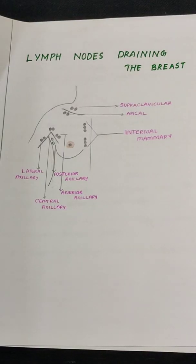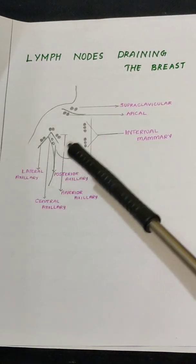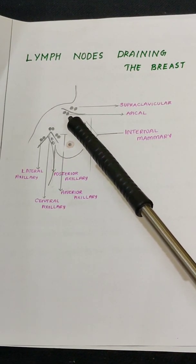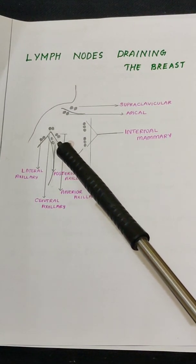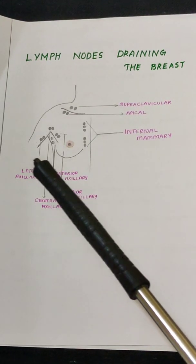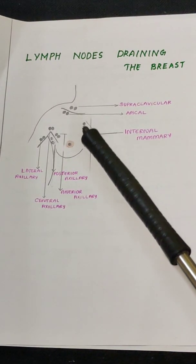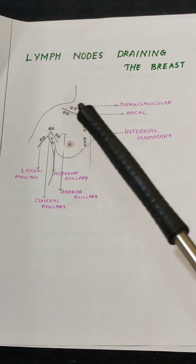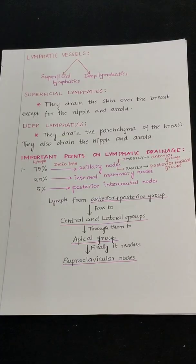Looking at this diagram, you can see the groups of axillary lymph nodes: the apical axillary, lateral axillary, central axillary, posterior axillary, and anterior axillary. Also shown are the internal mammary nodes and the supraclavicular lymph nodes — these are the lymph nodes draining the breast.